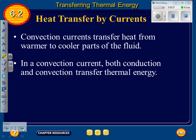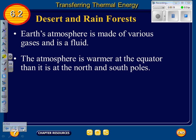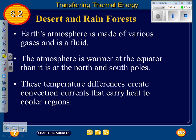In a convection current, both conduction and convection transfer thermal energy. Earth's atmosphere is made of various gases and is a fluid. The atmosphere is warmer at the equator than at the north and south poles, and these temperature differences create convection currents that carry heat to cooler regions.